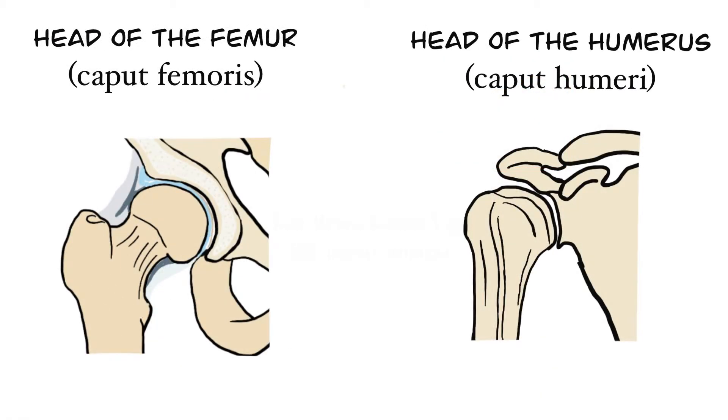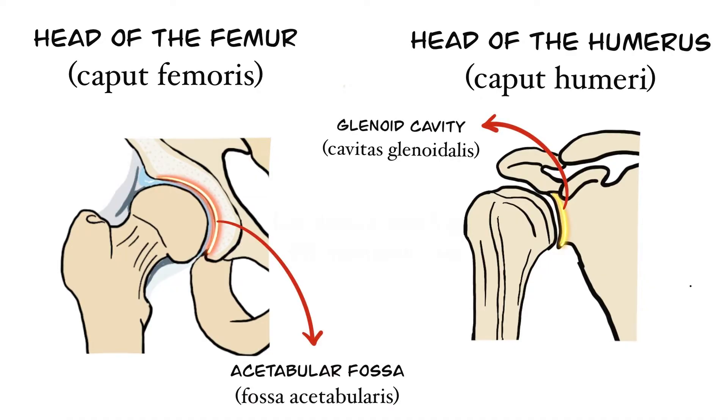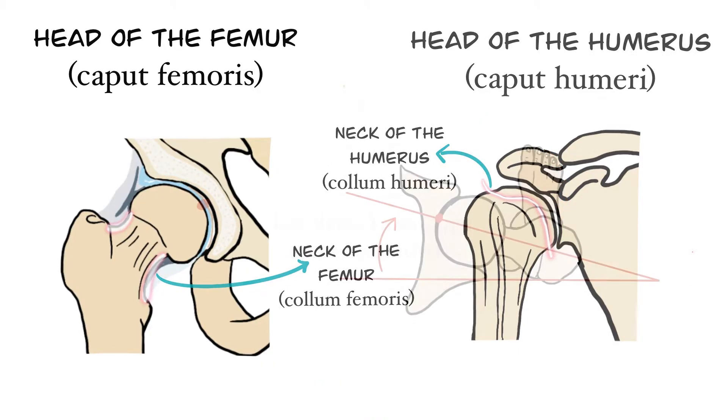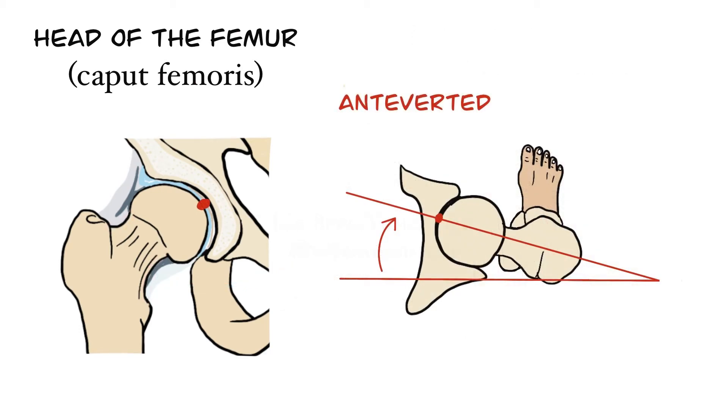Femoral head is more stable in the acetabulum than the humerus is in the glenoid cavity. The first reason for this is while the glenoid cavity is shallower, the acetabular fossa is quite deep compared to the glenoid cavity. The other reason is the femur has a longer neck than the humerus and it is anteverted. Normal range of this angle is between 8 to 15 degrees and this provides sufficient movement and proper alignment for movements that occur at the hip joint.